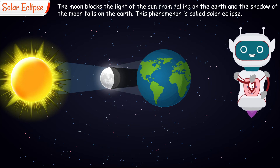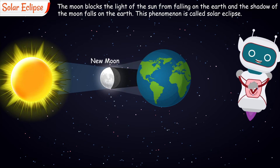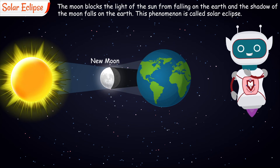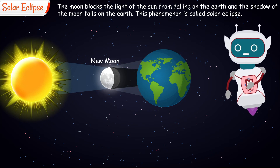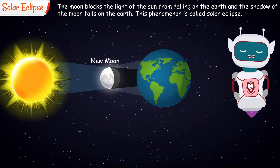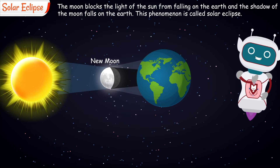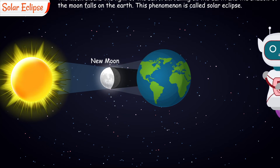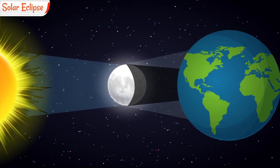The Solar Eclipse occurs during the new moon. Whether you see a total or partial solar eclipse depends on your position on Earth. If you are in the direct path of the shadow, you will see a Total Solar Eclipse. If you are not in the direct path, you will see a Partial Solar Eclipse.